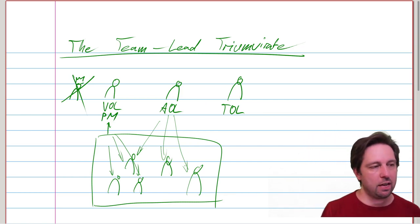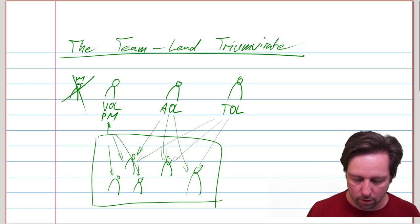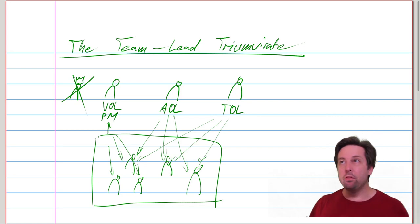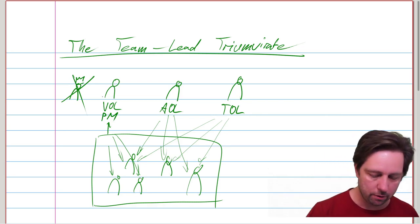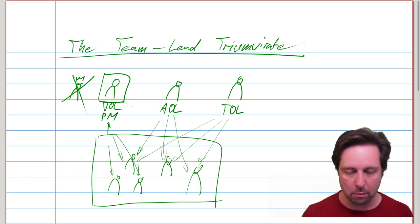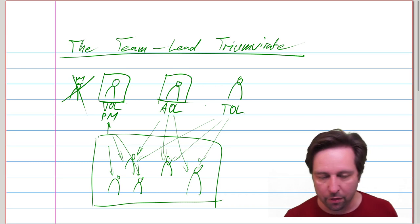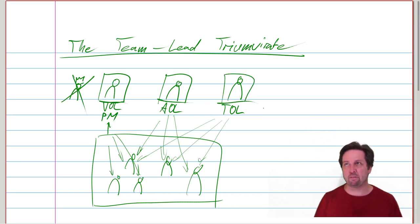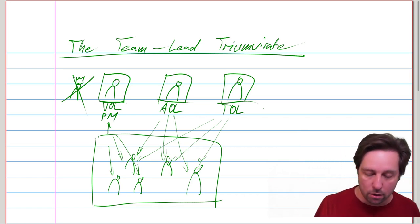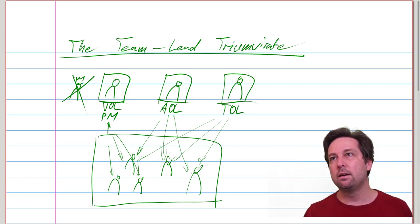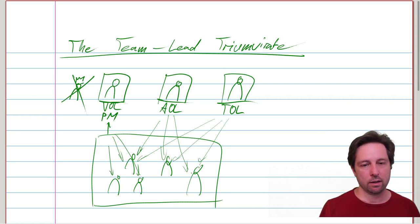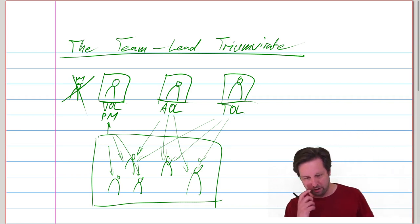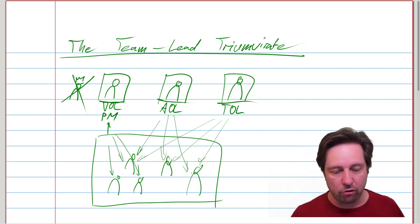And then lastly, of course, we've got the team outcome lead. So this is somebody who has an eye on the people. This person here, the value outcome lead, they have an eye on the value. The architecture outcome lead, they have an eye on the technology. And the team outcome lead, they have an eye on who's actually working here. Do they have the skills? Do we have enough staffing? Is everybody happy? Is everybody supported enough?